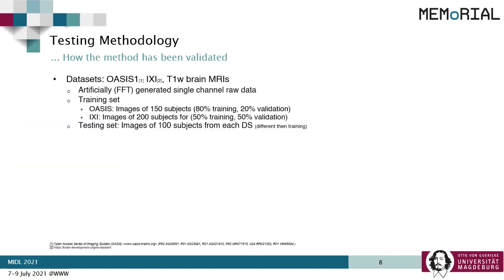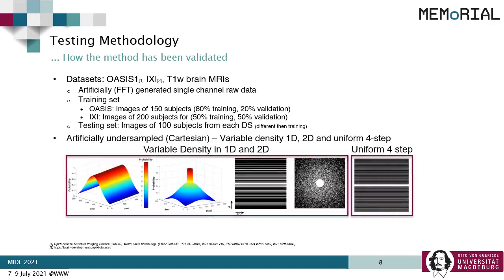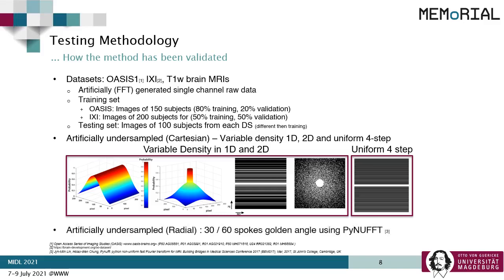To evaluate this approach, two different datasets were used: OSS1 and ICSI. As these datasets only contain reconstructed images, single-channel raw data was artificially created by applying fast Fourier transform. 150 subjects were used in the OSS1 training set and 200 subjects for ICSI; 100 subjects each were used for both test sets. Under-sampled data was created artificially. For Cartesian sampling, variable density 1D and 2D sampling patterns and a uniform 4-step GRAPPA-like pattern were used with different acceleration factors. For radial sampling, 30 and 60-spoke golden angle sampling was performed using PyNUFFT.